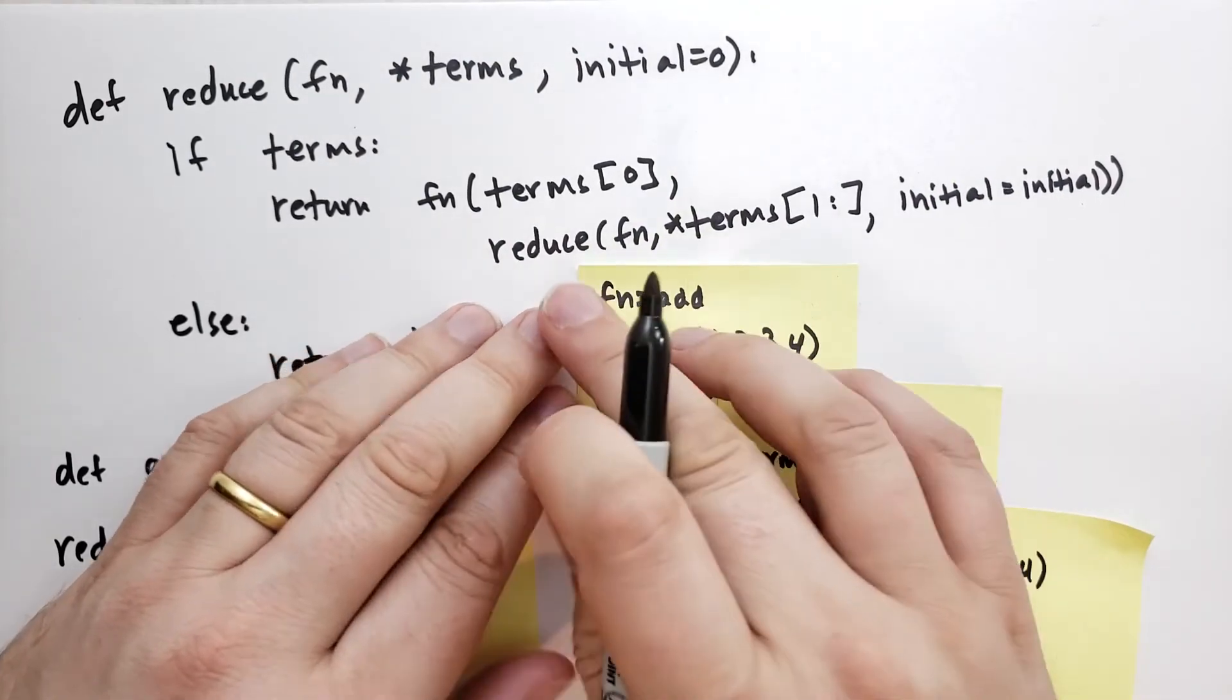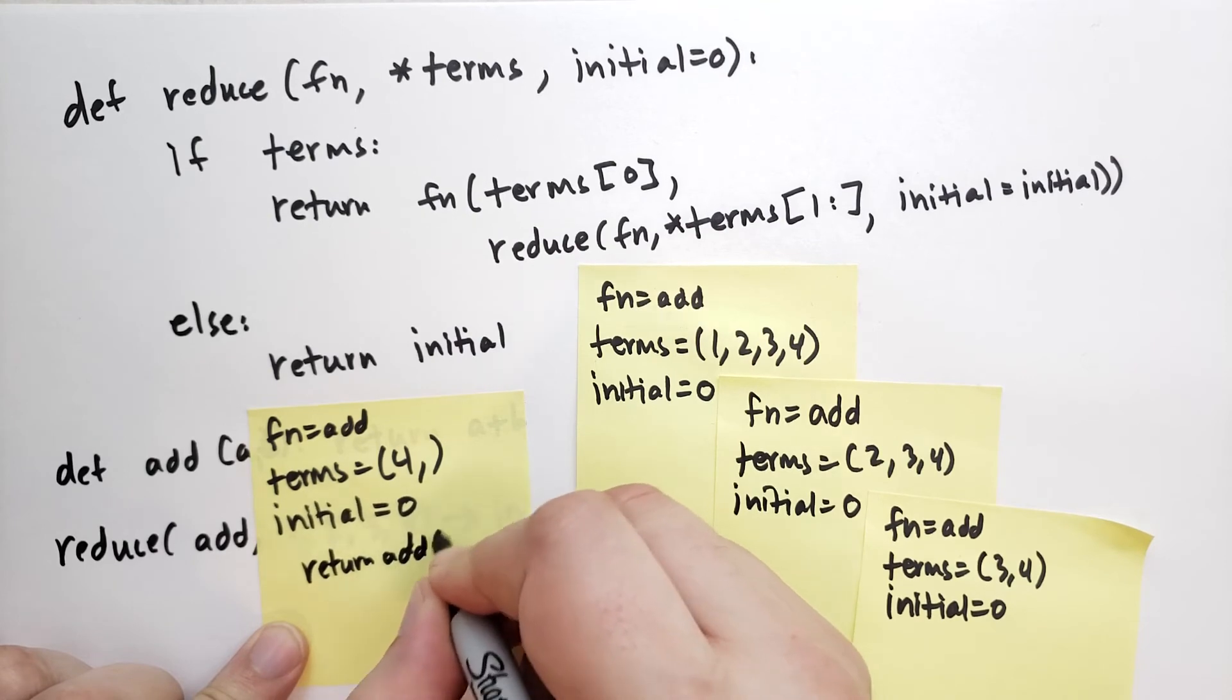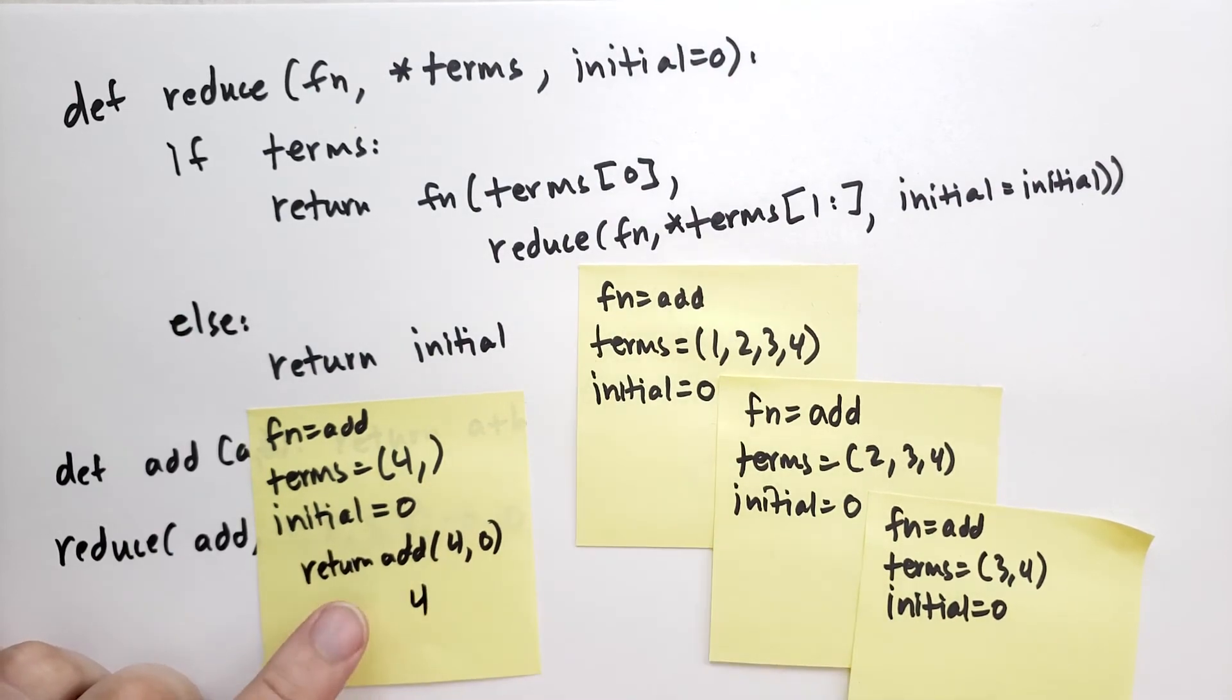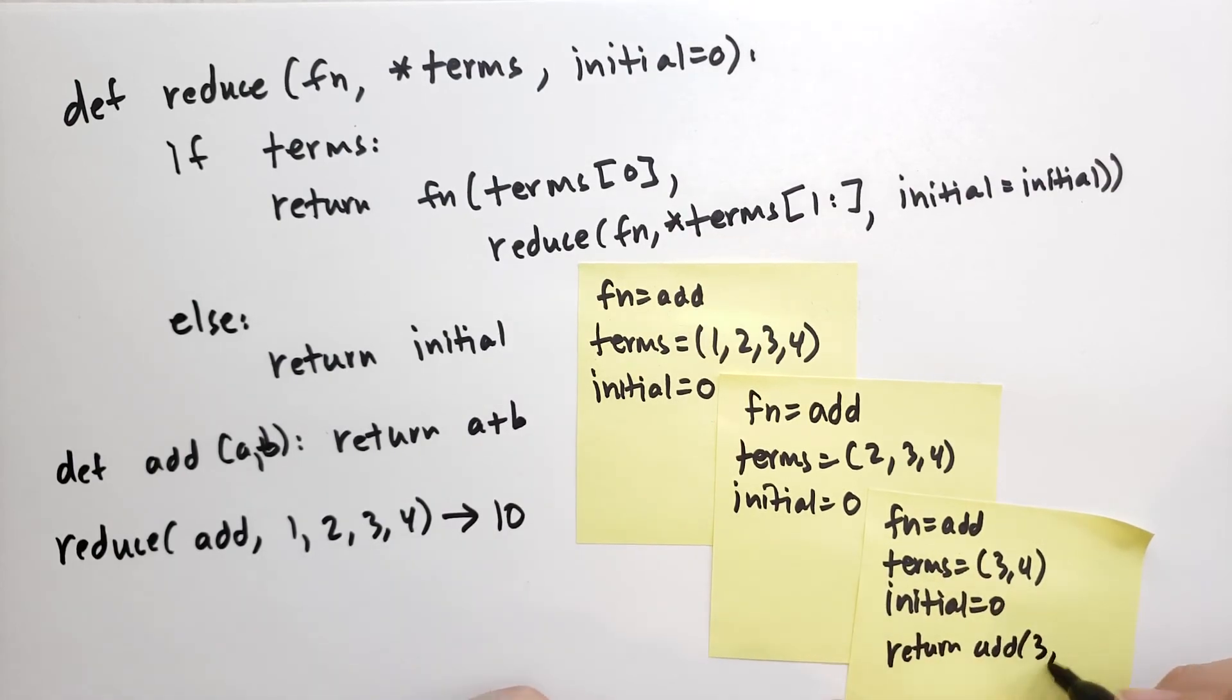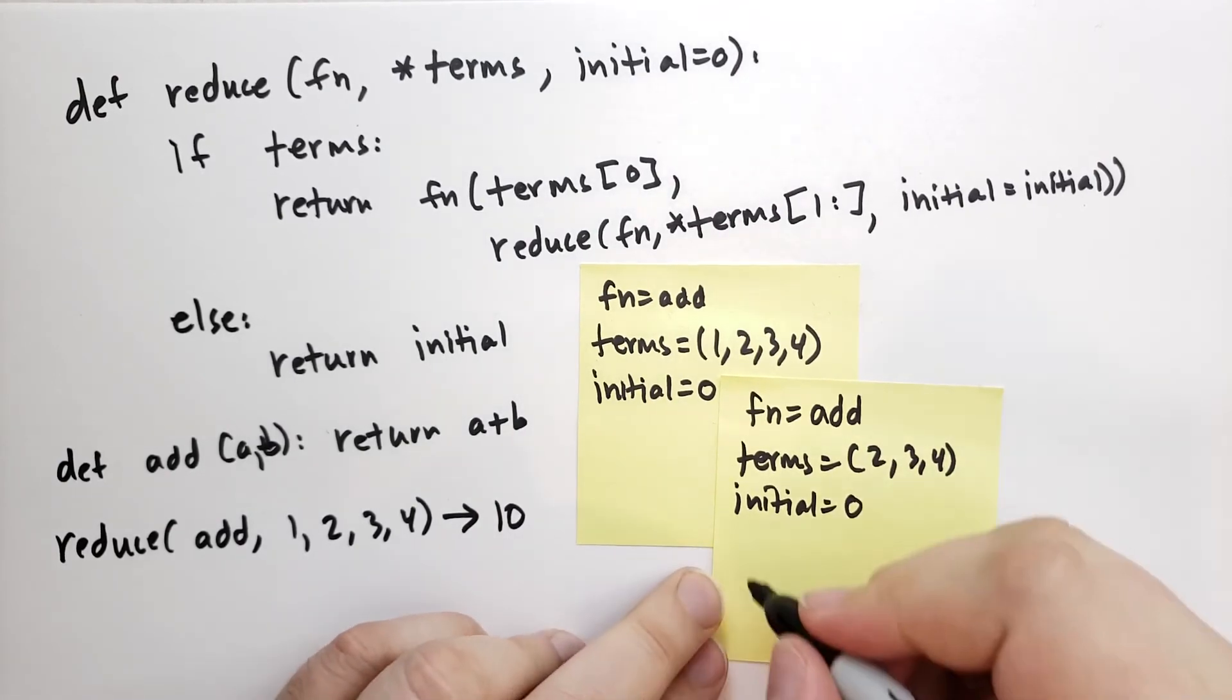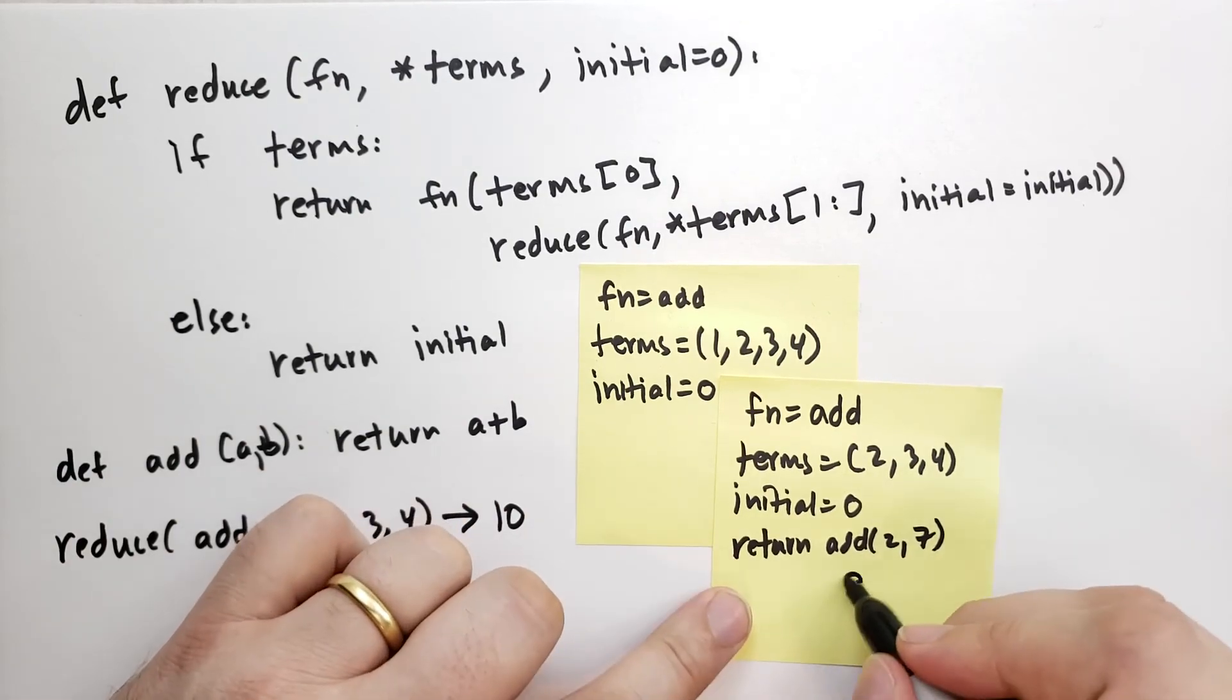So we return 0. So this reduce was 0. The first term was 4, so this is going to return add(4, 0). What's 4, 0? That's just 4. So it's going to return 4. So we return 4 up here. This guy is going to return add of, what's the first term? 3, 3, 4, which is 7. So this guy is going to return add the first term, which is 2, and 7. So that's going to return 9.